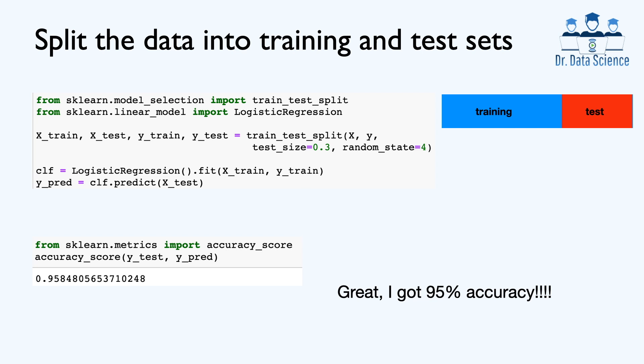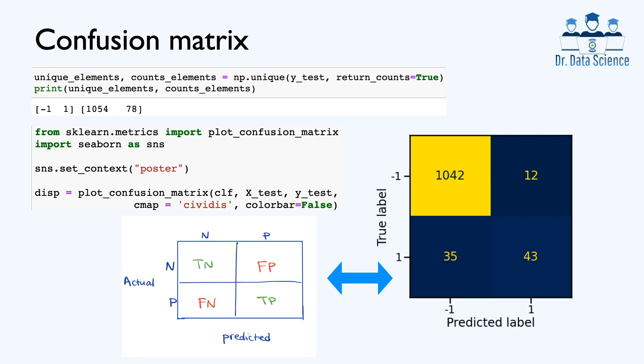However, a fundamental question here is, how successful is our classifier in terms of predicting samples that belong to the minority class, which is the positive class or plus one in this example. To further investigate this problem, let's plot the confusion metrics, which is also available in scikit-learn.